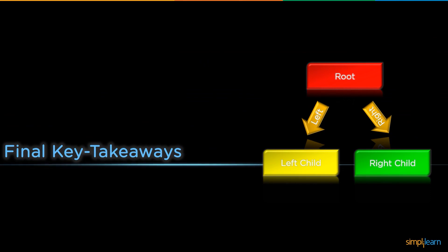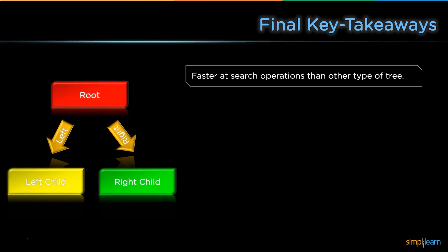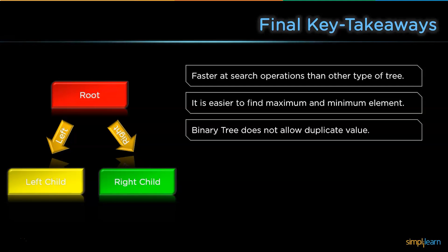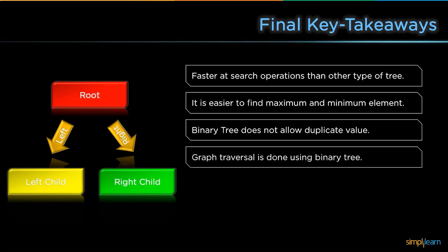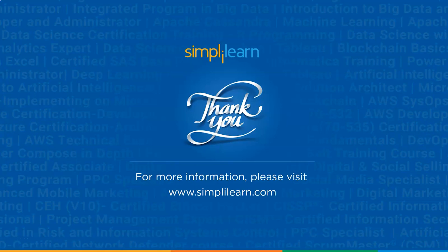Now for the final key takeaways: a binary tree is faster at search operations than other types of trees, and it is easier to find maximum and minimum elements in a binary tree. Binary trees do not allow duplicate values, graph traversal is done using binary trees, and they are used to convert postfix expressions into prefix expressions.